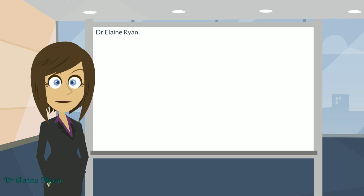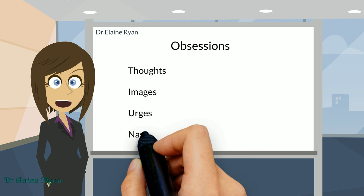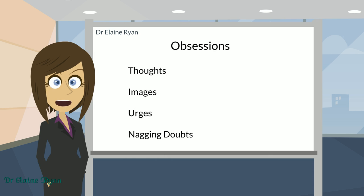I don't want to spend too much time detailing all the ways it can manifest itself. So I'm just going to give a quick overview and then jump straight into it. The obsessions are those thoughts, images, the urges that you get and those nagging doubts. And I'm going to explain each of those now.